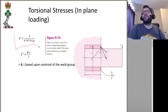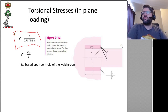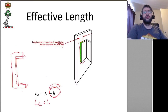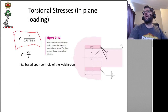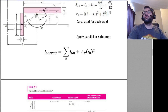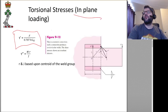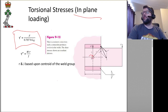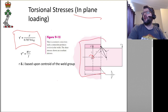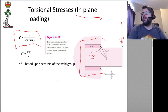We talked about direct loads — they're assumed to be carried equally across the entire cross section. If we're trying to carry a bending load, that is not the case. So if we have an in-plane loading situation where the load that is applied is offset from the centroid of the weld but it's still in the same plane as the weld, then this causes a twisting action which causes torsional stress. It's quite similar to calculations you've already seen.